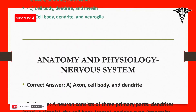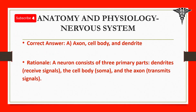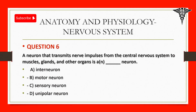Correct answer: A. Axon, cell body, and dendrite. Rationale: A neuron consists of three primary parts. Dendrites receive signals, the cell body (soma), and the axon transmit signals.